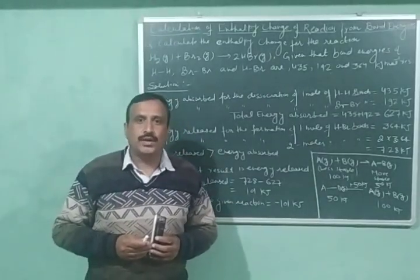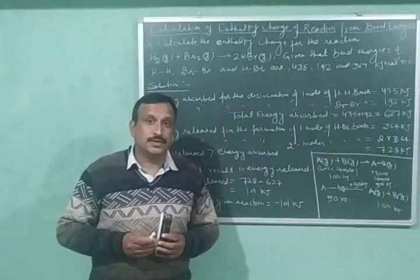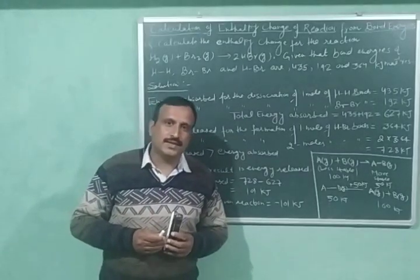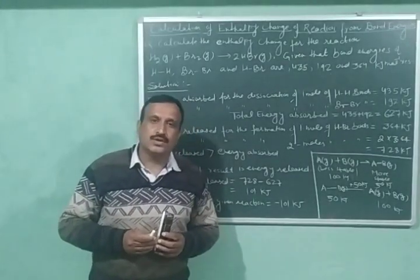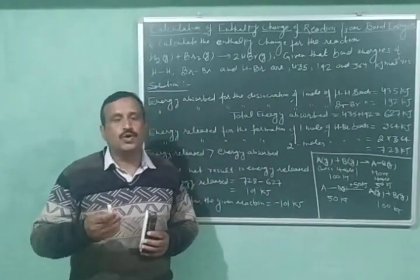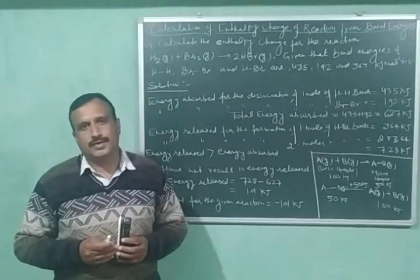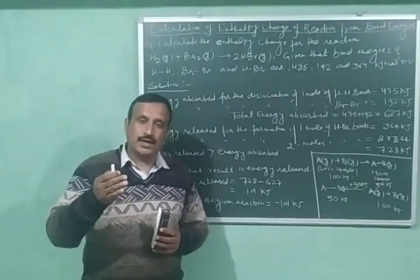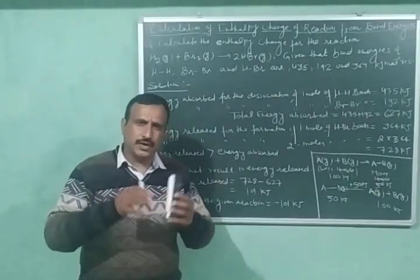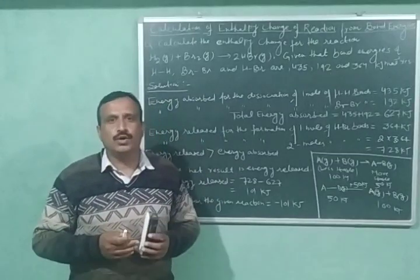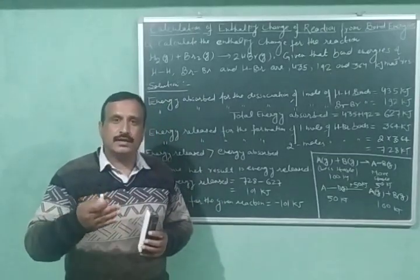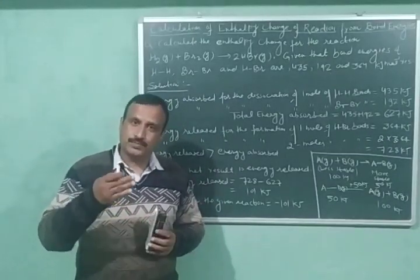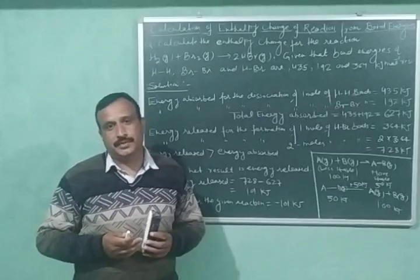When a chemical reaction takes place, some bonds of reactants are broken and some new bonds of products are formed. And if we know the bond energies of various bonds involved, then we can easily calculate the delta H of a chemical reaction.